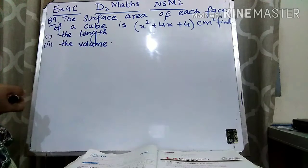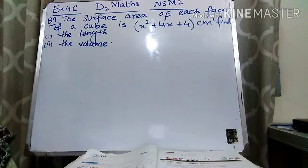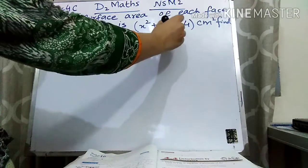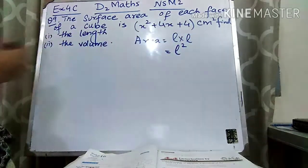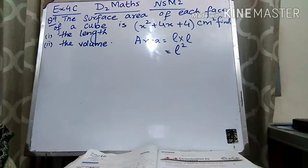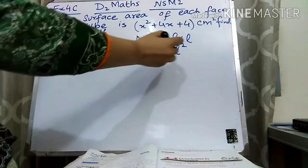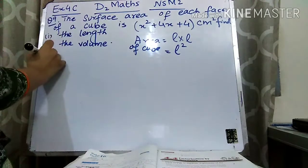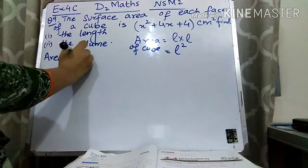What is given in the question? Surface area of the cube is given. Remember that in a cube, all sides are equal. So the formula of the area will be: since all sides are equal, length and breadth are both equal to L. So area of a face of a cube is L square.